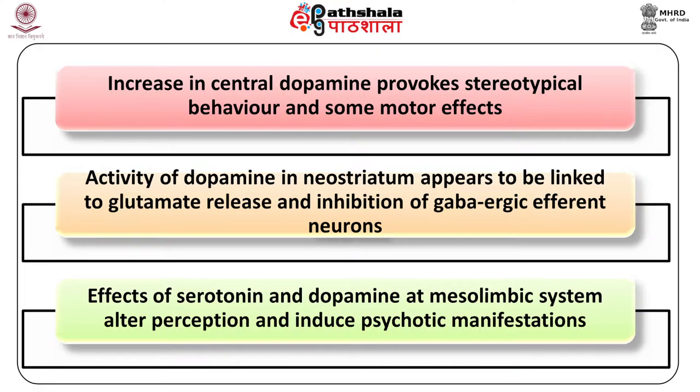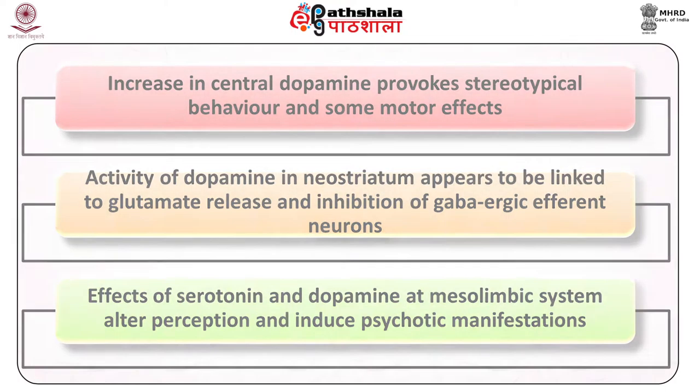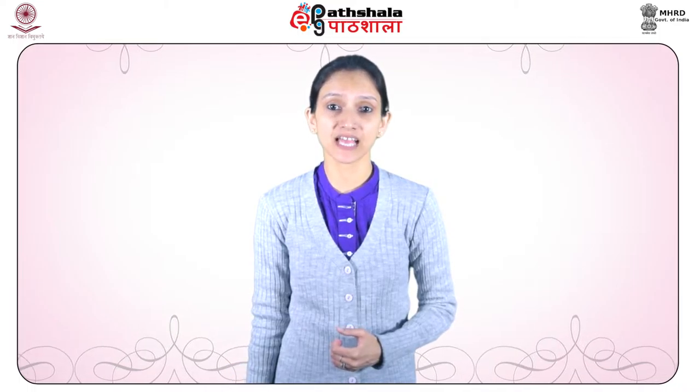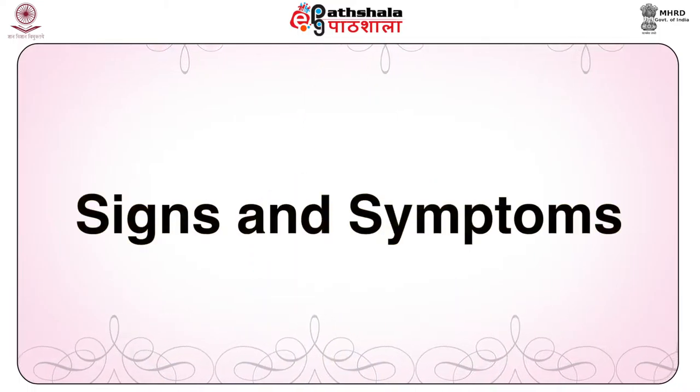The effects of serotonin and dopamine at the mesolimbic system alter perception and induce psychotic manifestations. Amphetamine forms are effortlessly absorbed as particles that are extremely lipid soluble. The most noticeable monoamine neurotransmitter involved in the effects of amphetamine is dopamine. Dopamine causes the desirable effects of the drugs as well as some of the most disturbing psychological effects, such as stereotypic behaviours and psychosis.